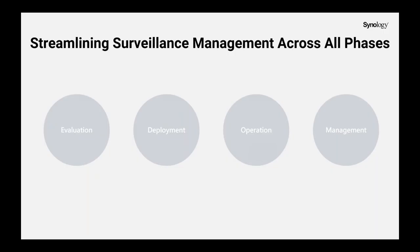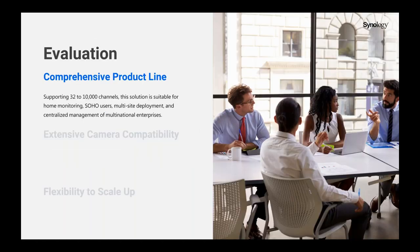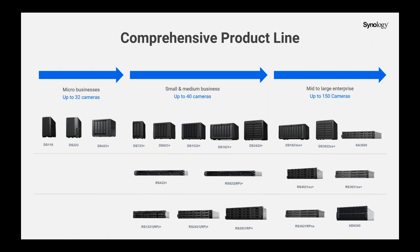Starting from the evaluation phase, Synology offers flexible solutions that help businesses optimize the procurement process. We have a comprehensive product line that can fulfill requirements for projects at all scales. Our products are suitable for a small branch office with two to three cameras, medium-sized businesses with about 50 cameras, as well as multinational corporations that demand multi-site management. For example, higher-end models with more capabilities can be used in headquarters to perform multi-site management, while for branch offices, station models will be ideal for day-to-day operations. Businesses can evaluate applications and budgets in different sites and customize the most effective surveillance infrastructure.